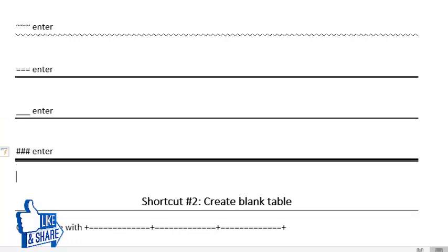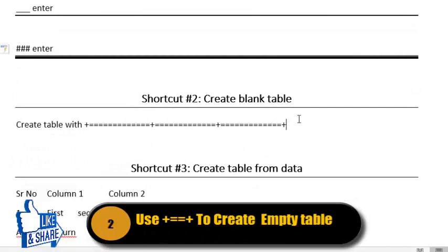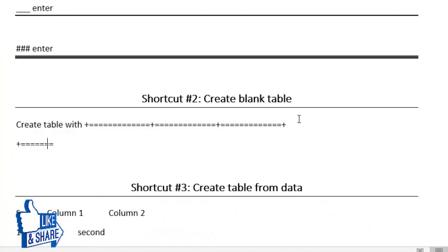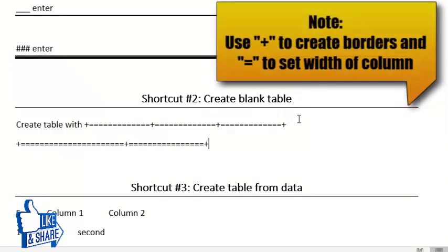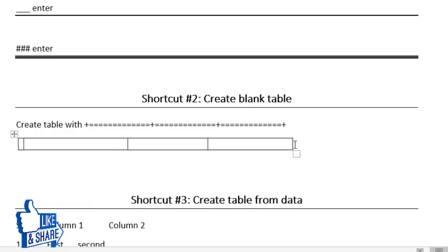To create a blank table, use a plus sign and then equal signs to fill the column width, then another plus sign and equal signs, then another plus sign. The number of equal signs determines the column width, and the plus signs become the borders. Once done, press Enter to get a formatted table.